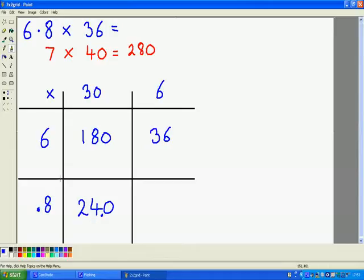Then 8 tenths multiplied by 6. Again 8 times 6 I know is 48. My decimal point would be here. But 48 needs to move over once because it needs to get 10 times smaller. So my decimal point would be here.